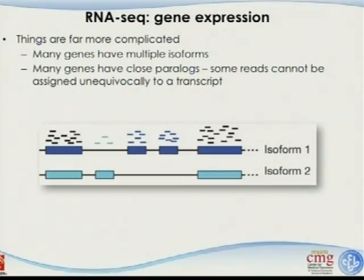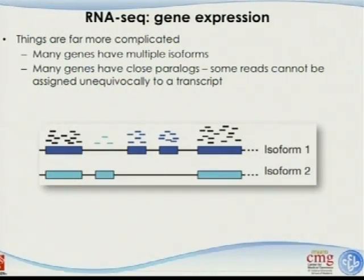But things are more complicated — if it were that easy, we wouldn't have to go through this. As discussed in the Chris Burge paper, as many as 92% of multi-exon genes can be alternatively spliced, meaning they have multiple isoforms. This is a universal problem. Many genes have close paralogs, and some reads cannot be assigned to two transcripts. Consider one gene with two different isoforms: some exons are included in both, and others are unique to each. How do we calculate the length L in that case? That becomes a tricky issue.